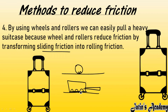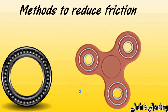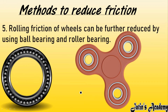The fifth method: rolling friction of wheels can be further reduced. Rolling friction is already less compared to sliding friction. If you want to reduce rolling friction even further, you can use ball bearings.